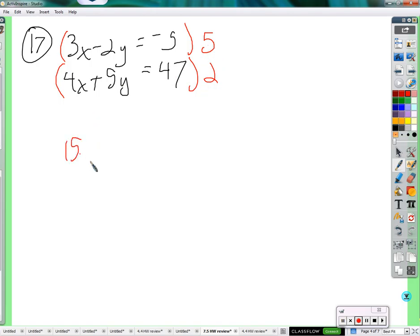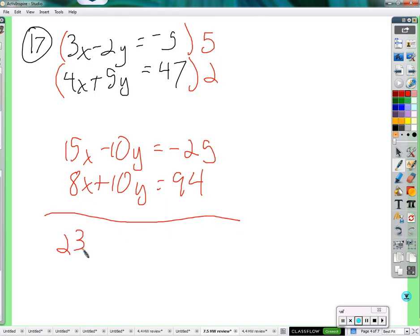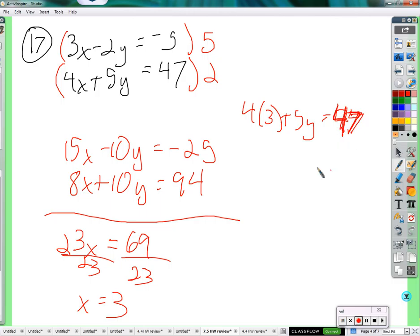So multiply both sides by 5. You get 15x minus 10y equals negative 25. Now multiply this guy by 2. 2 times 4x is 8x. 2 times 5y is 10y. And 2 times 47 is 94. Add these together. You get 23x plus 0y equals 69. Dividing by 23 gives x equals 3. I can find y by plugging it in here. This is 12, so we'll subtract 12 from both sides instead of writing that next step. 47 minus 12 is 35 divided by 5, so y equals 7.